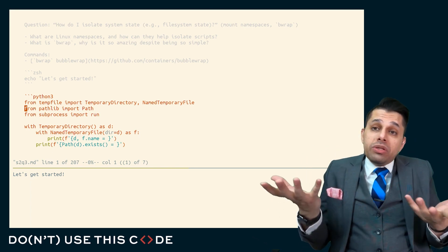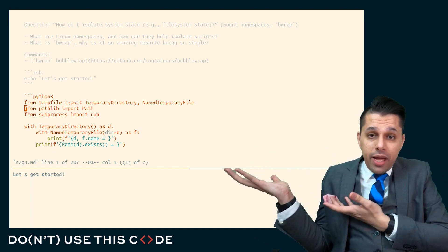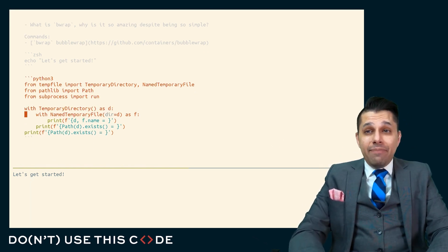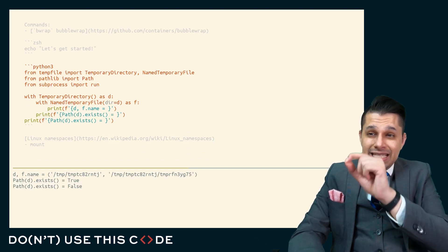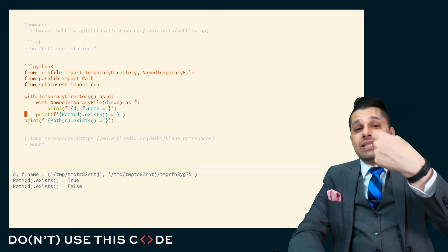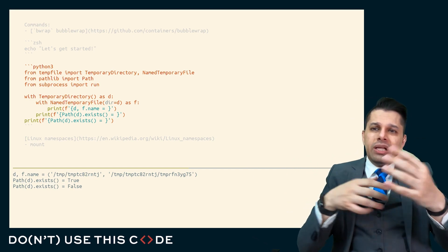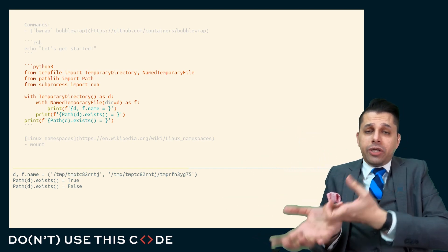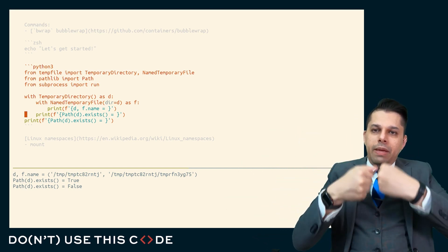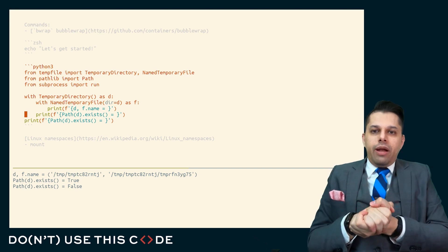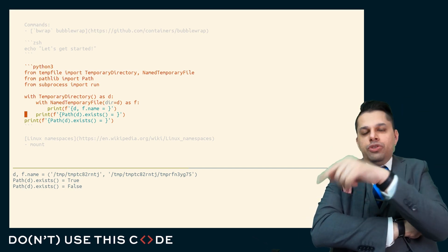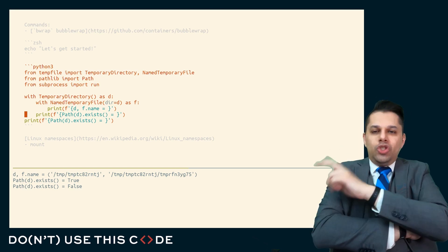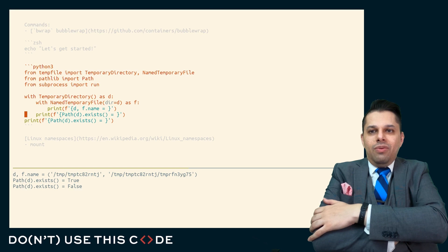When that happens, typically you might use something like the tempfile module from the Python standard library. You can see this creates a temporary directory with a named temporary file in that directory. This temporary directory exists within a context and then gets deleted afterwards. I can customize what these are called, clean them up nicely, and customize whether they get automatically deleted. That way, people don't clobber each other or scramble to figure out why their script is failing — like using only one hard-coded temporary directory so two people running it simultaneously run into each other.